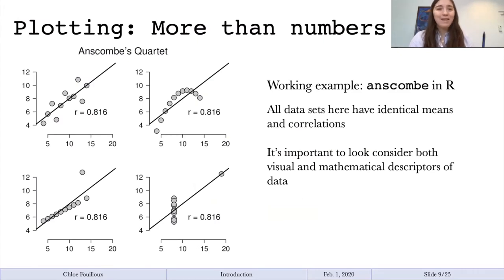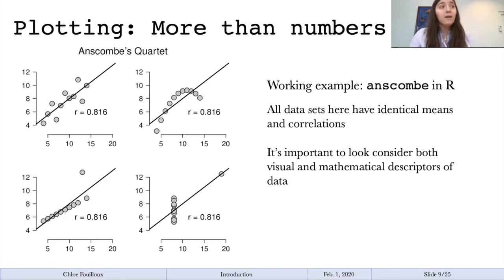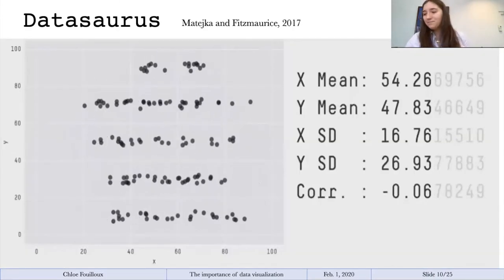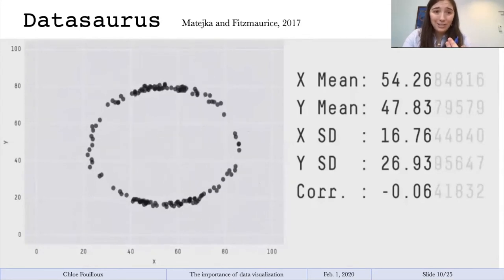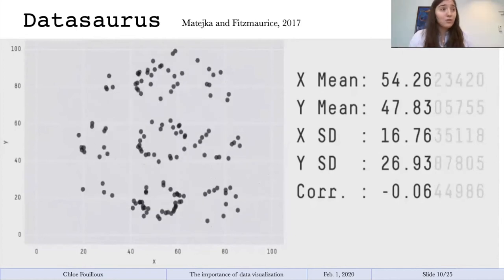Let me tell you why it's important to look at data beyond the numbers. This is a really famous dataset called Anscombe's Quartet. All of these data sets have the exact same mean and the exact same correlation to that regression line. But once you plot it, you see the nature of these data are so different — and you would have never understood that if you hadn't looked at them. This was also done in a fun way in 2017 with a dataset called Datasaurus, where all sets again have the same mean, standard deviation, and correlation — really showing that numbers tell a good part of the story, but looking at your information is also vital.